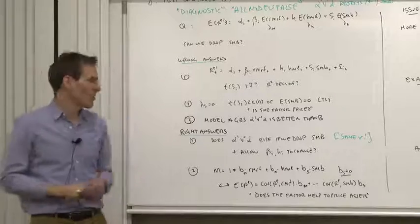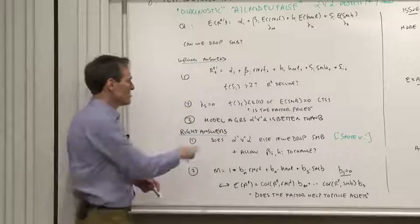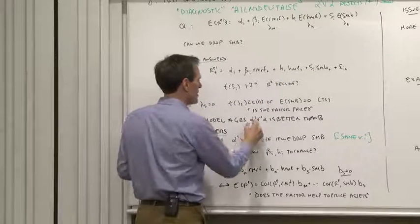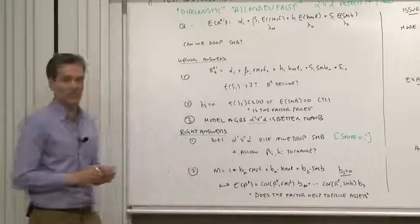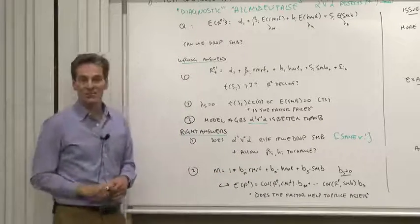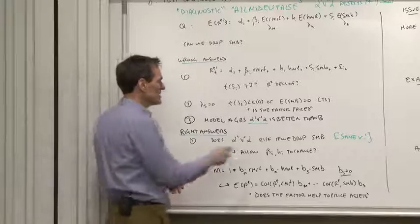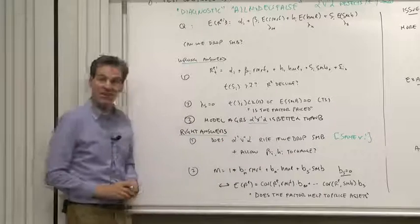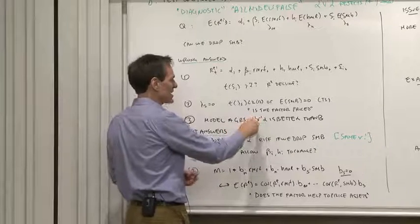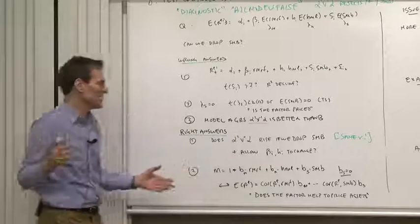Another common wrong question is to compare the model with SMB and the model without SMB by their GRS test statistics. Compute alpha prime V inverse alpha for one model and then the other model, and then say, aha, this model doesn't reject. It must be better than the other model. The reason is because you're using different V matrices here, and it's very easy to get a model to not reject by making no progress on the alpha and just blowing up the V matrix.